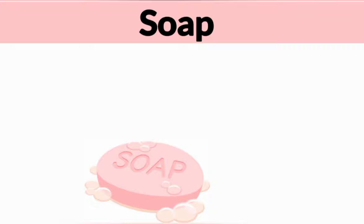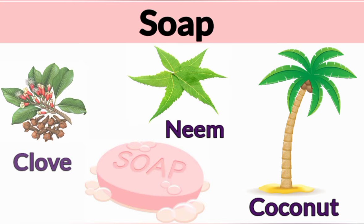Soap: We get soap from oils and juices of plants like neem, coconut and clove.